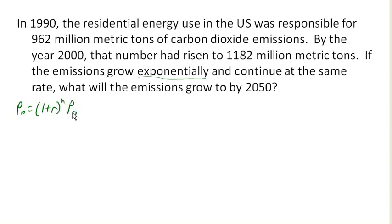So first thing I need to do is define how I'm going to measure my N. So since this is our sort of base year, let's go ahead and call this N equals 0. This is 10 years later, so that'll be N equals 10. And so we've got the amount of emissions in when N is 0, in other words in 1990, is 962 million metric tons. I'm going to leave off the million metric tons part and just remember that's my units.